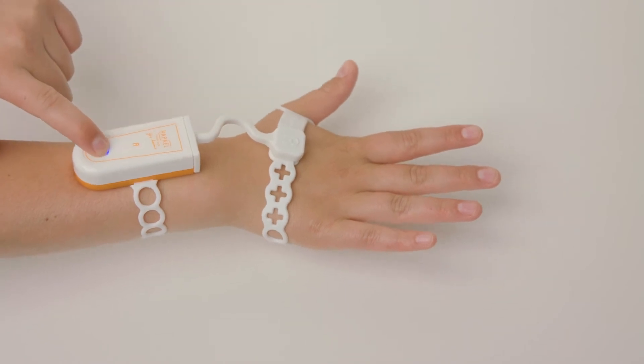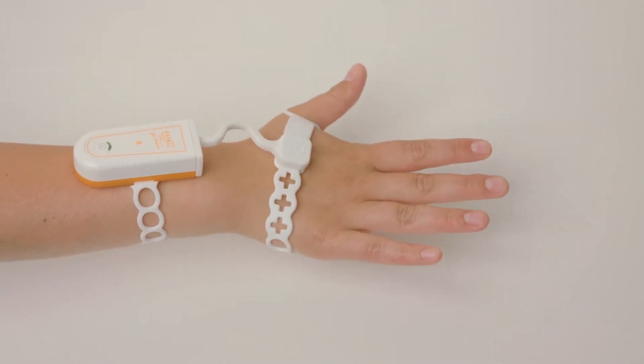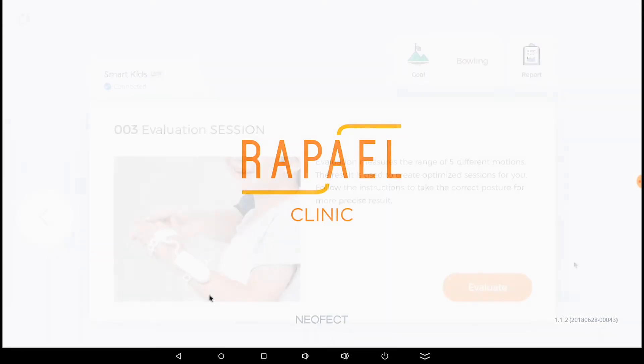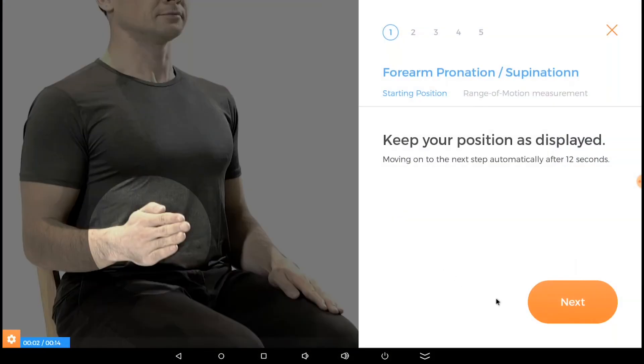Once the glove is on, press the power button until it glows green. Then start up the Raphael Home software app on your tablet. Press the orange Evaluate button to begin.